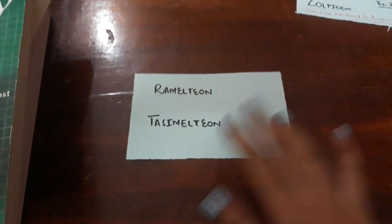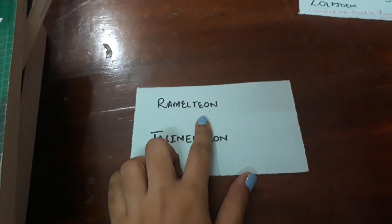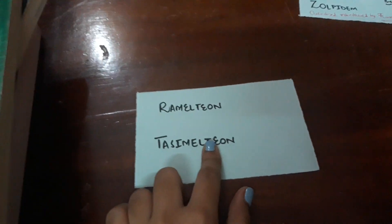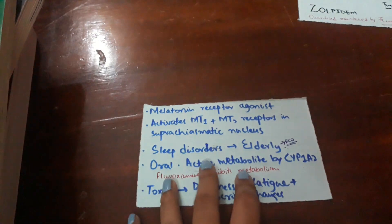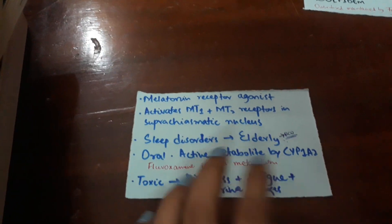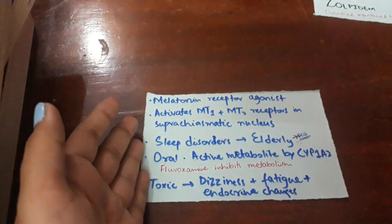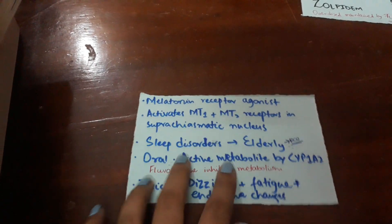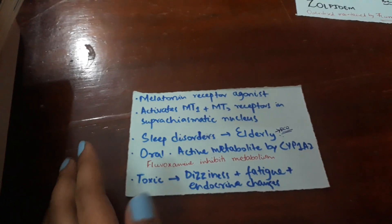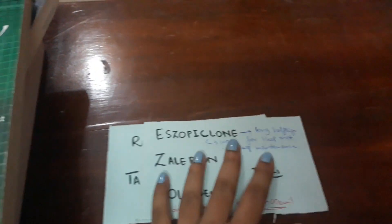We'll do two examples. On one side of my flashcard I have the drug name — like ramelteon and desmelteon — and on the other side I have all the properties I should know for that particular drug that are high yield and important for the exam. For example: what does it do, what is the mechanism of action, why is it used, how do we give it, what is the pharmacokinetics, and what are the toxicities of the drug. I make cards like this for all the drugs.